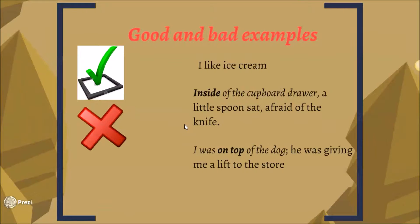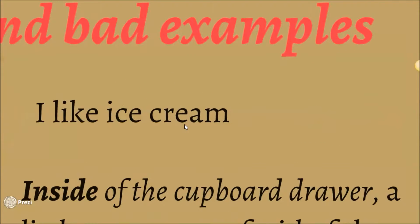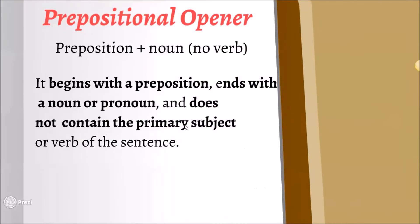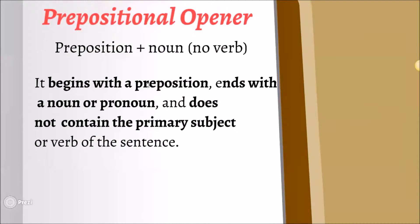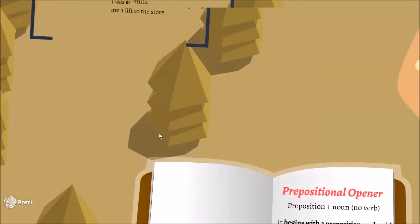So let's look at some good and bad examples. I like ice cream. So if we look at our definition, it does not begin with a preposition. It ends with a noun or pronoun, but it does contain the primary subject. It doesn't even have a comma after it. So this is an incorrect example.